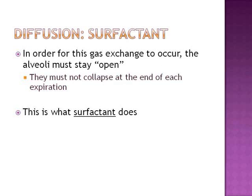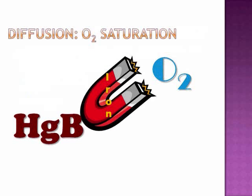Now, surfactant is crucial in all of that. In order for the gas exchange to occur, the alveoli must stay open — they must not collapse at the end of each expiration — and that's what surfactant actually does. Once in the capillaries, oxygen binds with hemoglobin. The iron acts as a magnet, drawing the oxygen to the hemoglobin, and once attached, the oxygen is transported throughout the body.